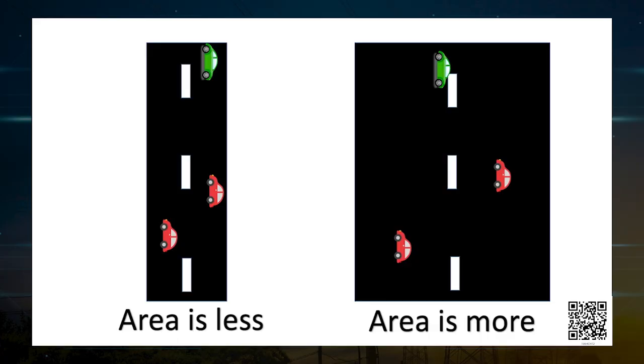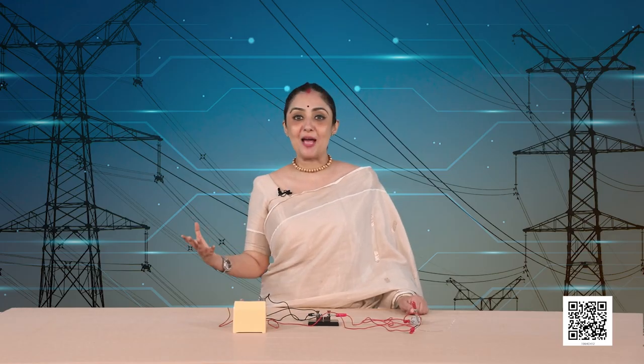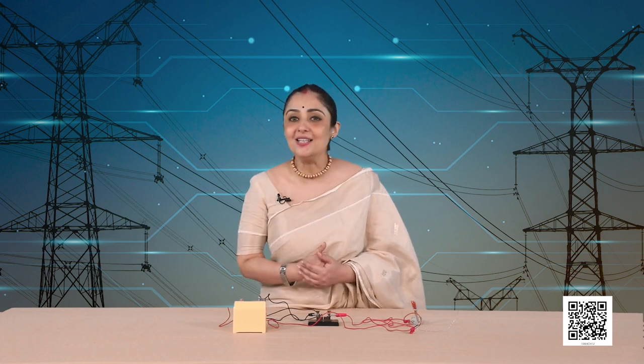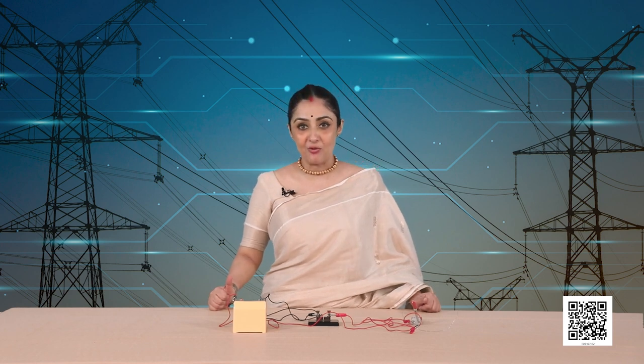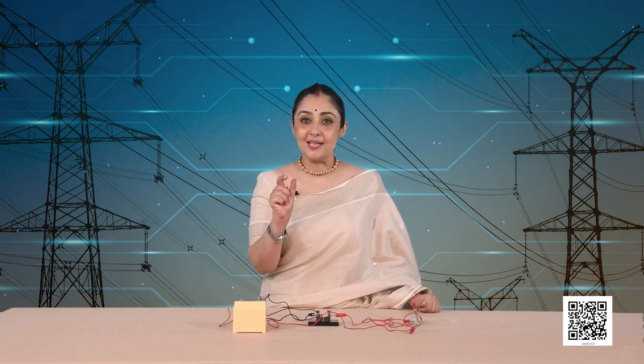Now imagine walking on a wide road versus a narrow road. The probability of a traffic jam on a narrow road is obviously more. So less area means more traffic jams — in other words, more resistance in the case of a thin wire. Resistance is inversely proportional to the area of cross section: thicker is the wire, lesser is the resistance.